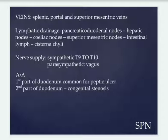Nerve supply: sympathetic is T9 and T10. Parasympathetic is by the vagus nerve, passing through the celiac plexus and then reaching into the duodenum.